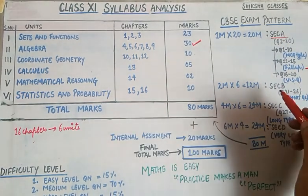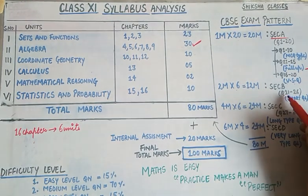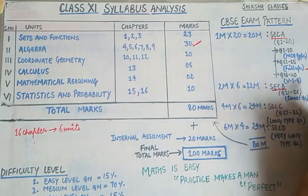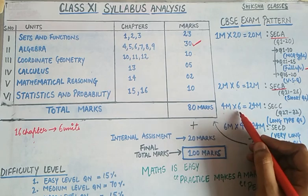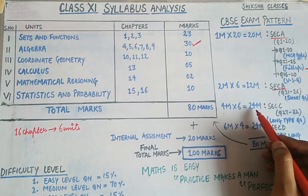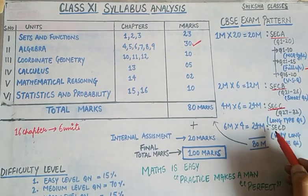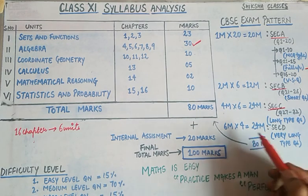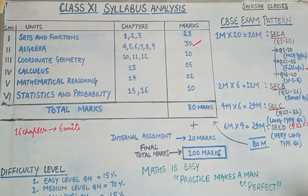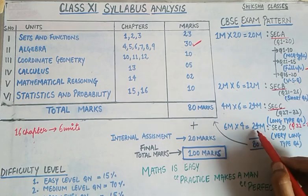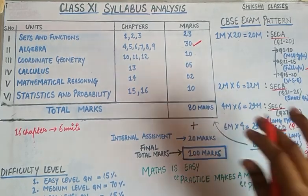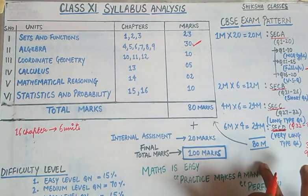Next is Section B: total 6 questions of 2 marks each — question numbers 21 to 26 — these are short type questions, giving a total weightage of 12 marks. Section C has questions of 4 marks each — total 6 questions from question number 27 to 32 — these are long type questions, giving a total of 24 marks. Section D has questions of 6 marks each — 4 questions from question number 32 to 36 — giving a total weightage of 24 marks. Total number of questions is 36.